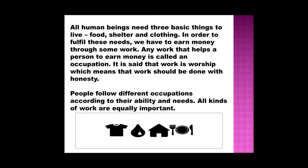From where will we get food, shelter and clothes? We have to earn money for that. To buy crops, to buy pulses, to buy milk, we need money. Through occupation, we have to do some job — then only we will get salary and earn money. For building houses and buying clothes, we need money. To fulfill these needs, we have to earn money, and to earn money, we have to do some work. Any work that helps a person to earn money is called an occupation.